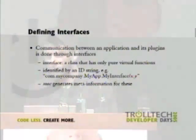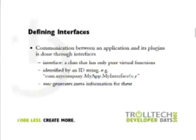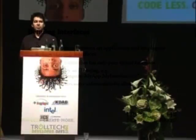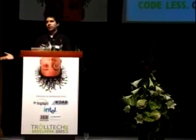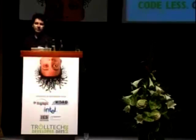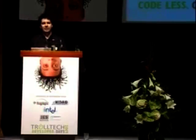The string typically has the form: name of your company, name of the application, name of the class, and version number — that's what is used internally for Qt's own interfaces: com.trolltech.qt, etc. MOC generates meta-information containing those ID strings, so everything is handled behind the scenes. You just declare the interface and associate the string to it once, and Qt generates it in the proper places. If the interface doesn't match, you get a null pointer back.